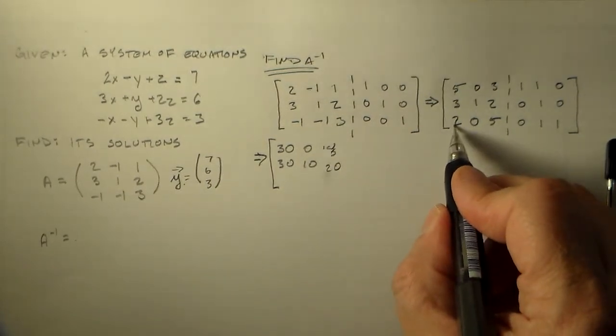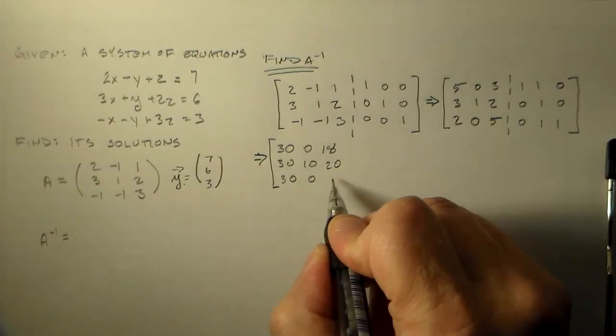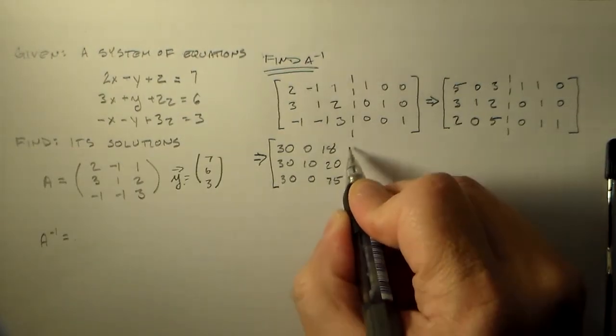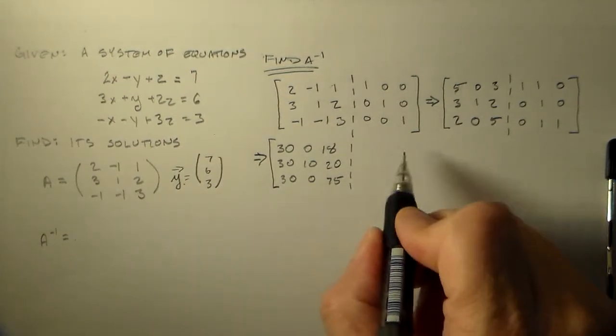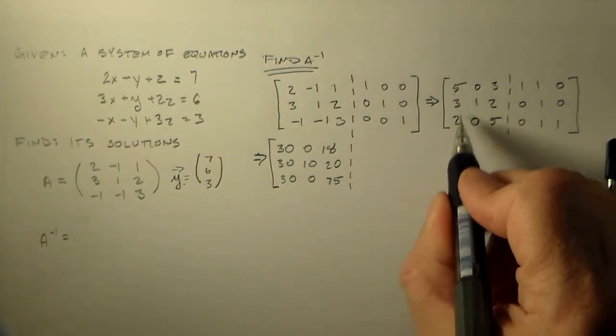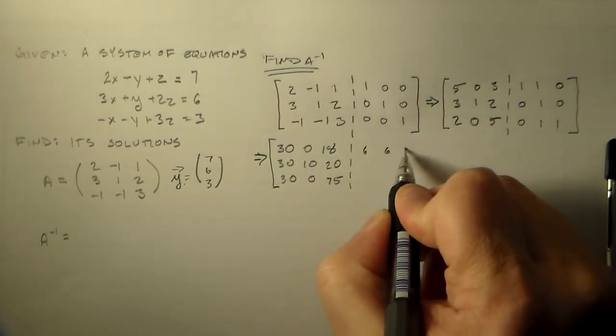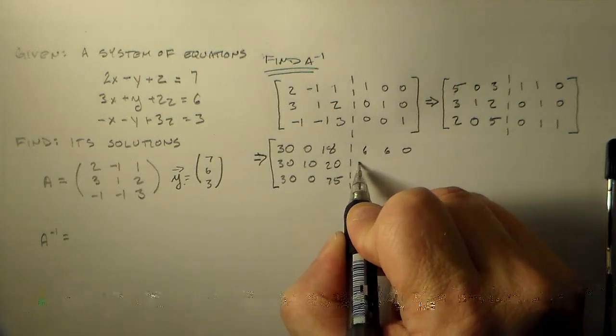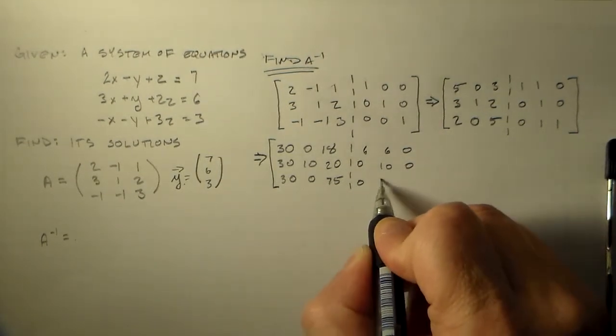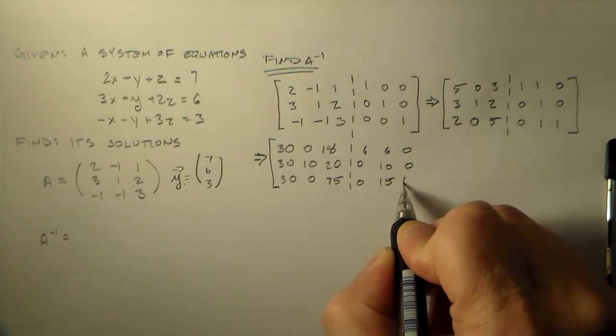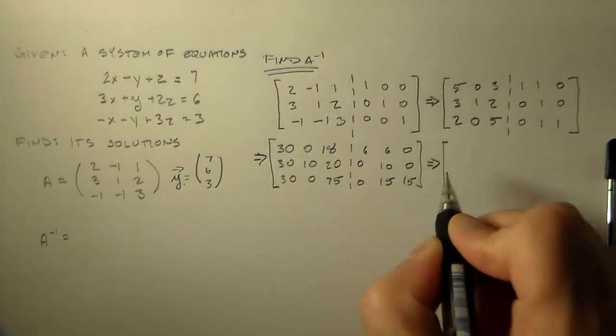Now we can just replace this. We have no reason to change it yet. Then we come down this way. 3 plus minus 1 is 2. 1 plus minus 1 is 0. 2 plus 3 is 5. 0 plus 0 is 0. 1 plus 0 is 1. 0 plus 1 is 1. So that's our first step.